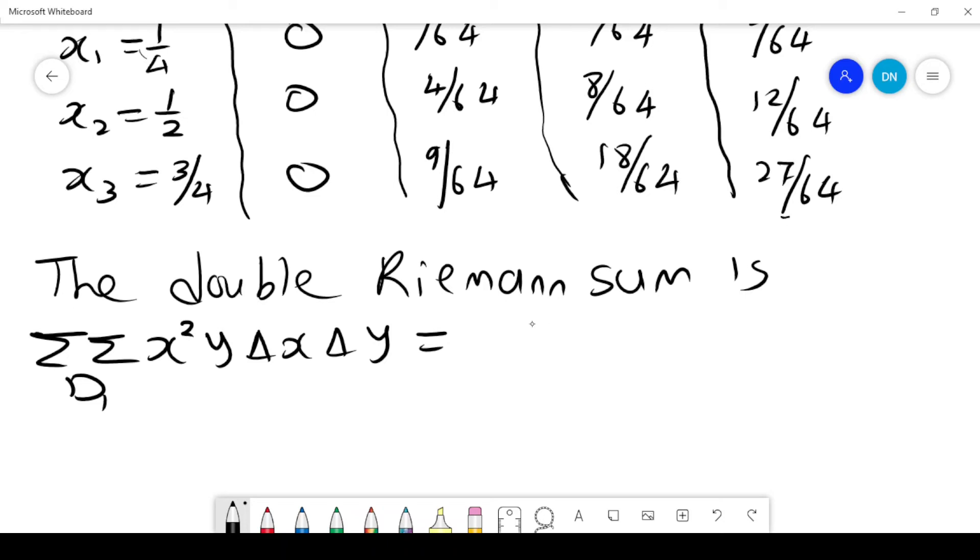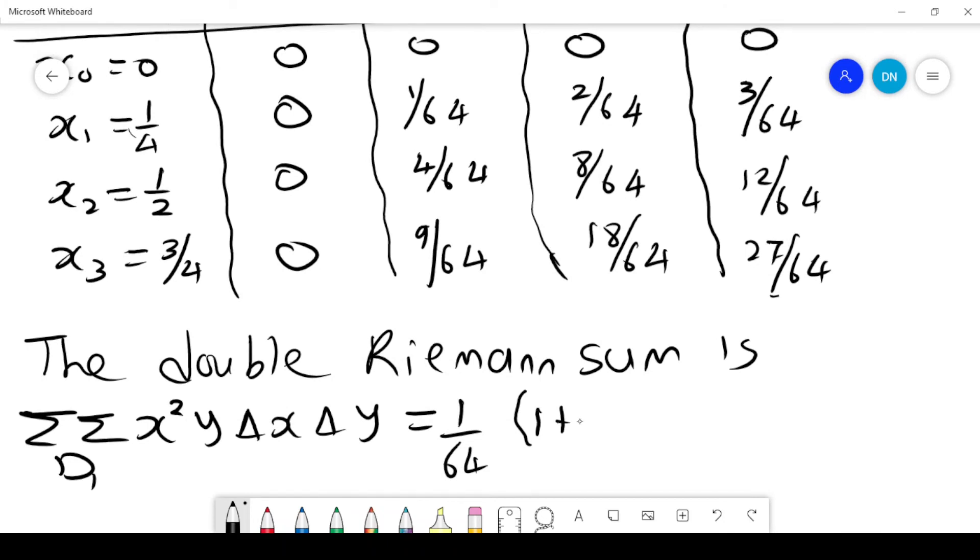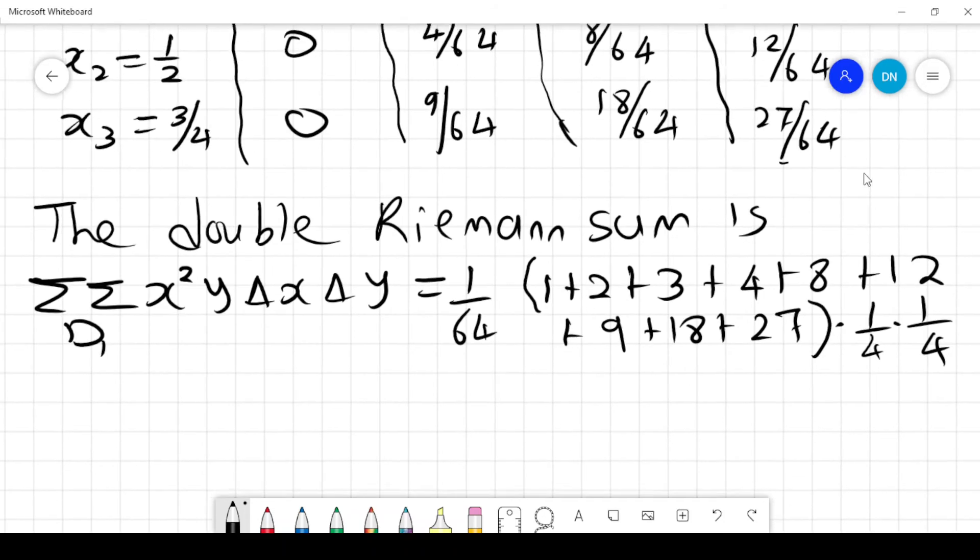There will be 1 over 16, so 1 over 64 will be put outside. So the first one is 1. We have 1 plus 2 plus 3 plus 4 plus 8 plus 12 plus 9 plus 18 plus 27. Then we multiply times delta x times delta y, and that's how we get the sum.